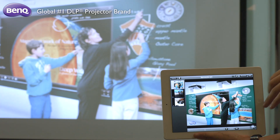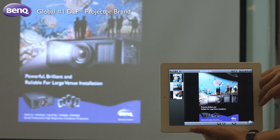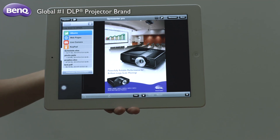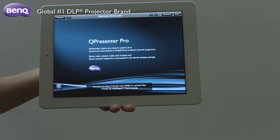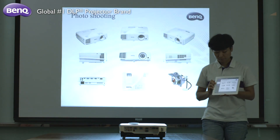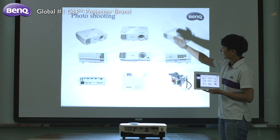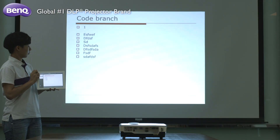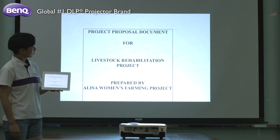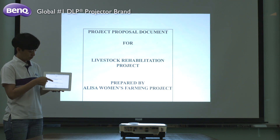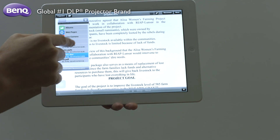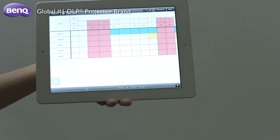You can display photos from your mobile device by tapping the photo icon and selecting the album you need. Tap the PowerPoint file saved in your mobile device. Here you can make annotations with the sketch function. The Q-Presenter Pro app also allows you to select other types of files saved on your mobile device, such as PDF files, Word files, and Excel files. Just follow the same steps of tapping the PowerPoint file first.